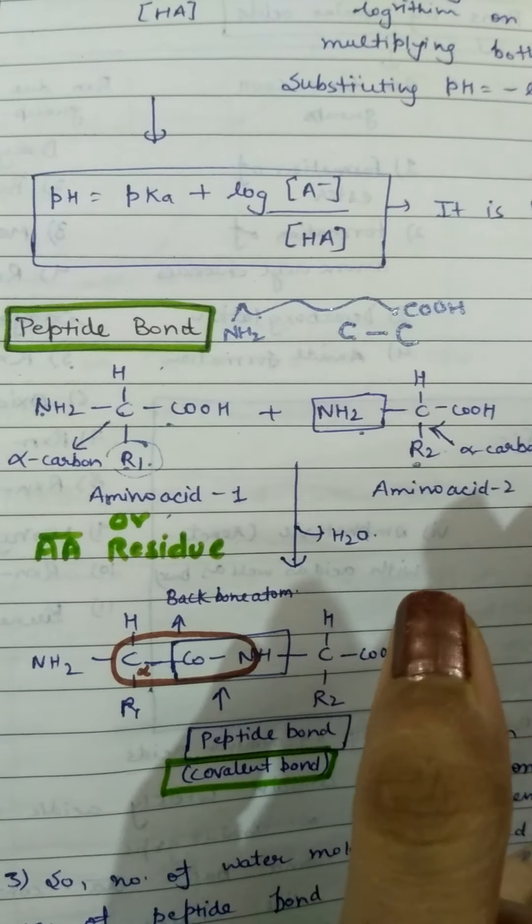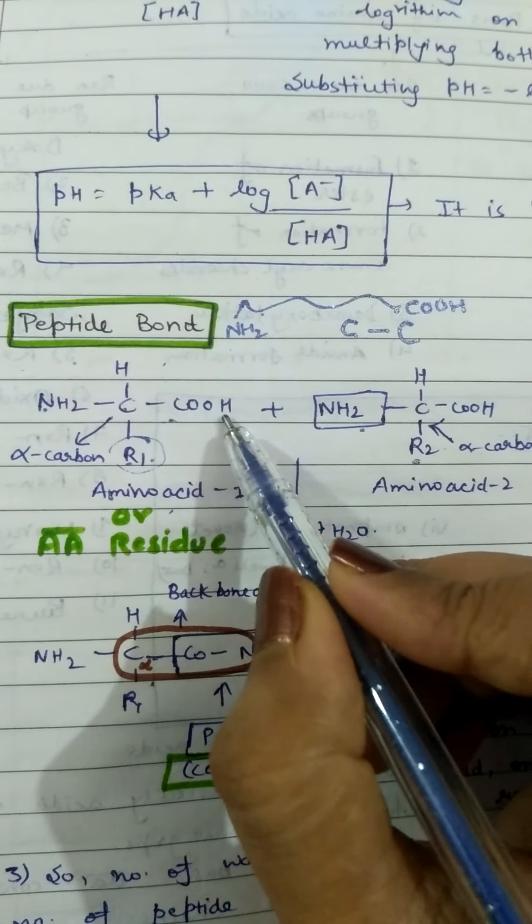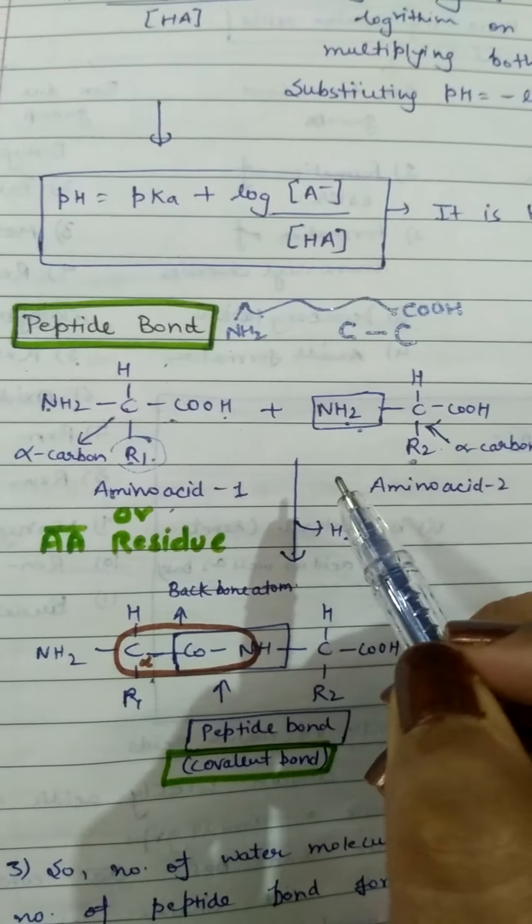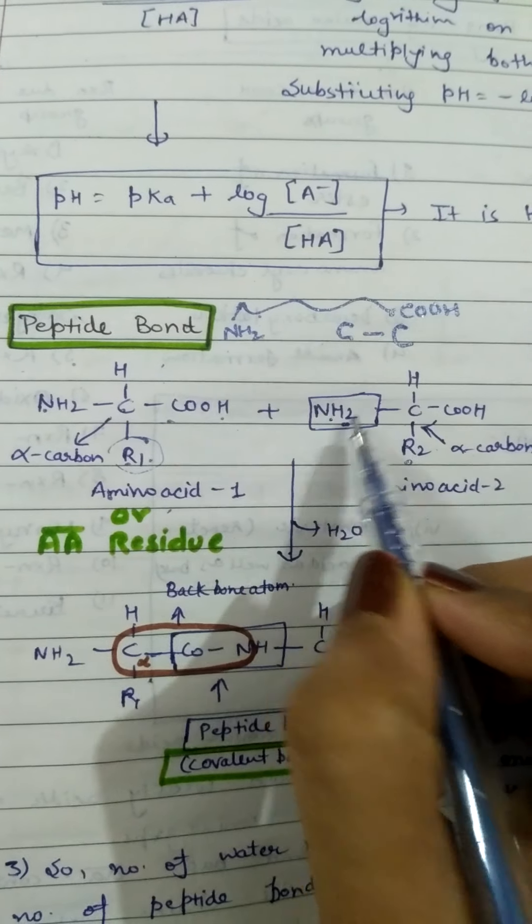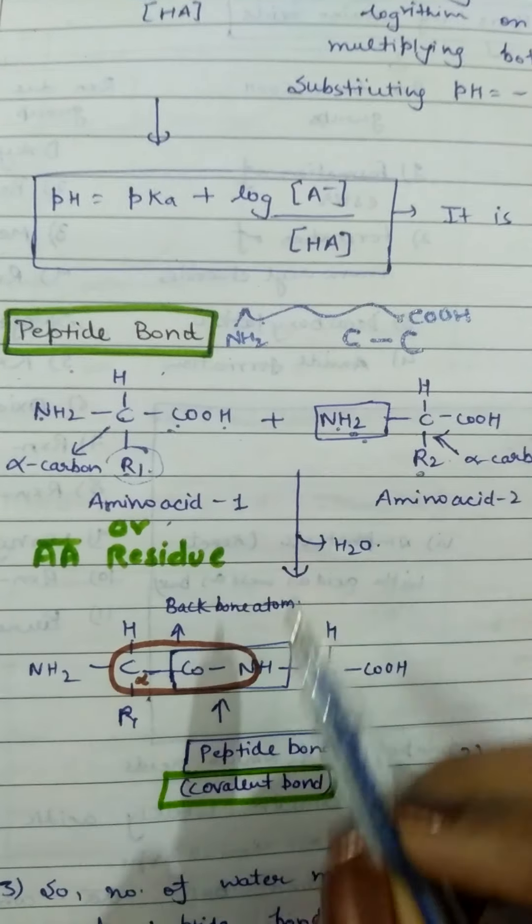We will remove water from here. You will know how to remove water from here. You will remove OH from here and H from here. If NH2 is here, then there will be NH. If COOH is here, then there will be CO. The bond will be formed.